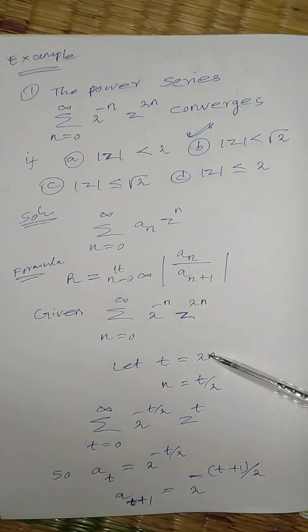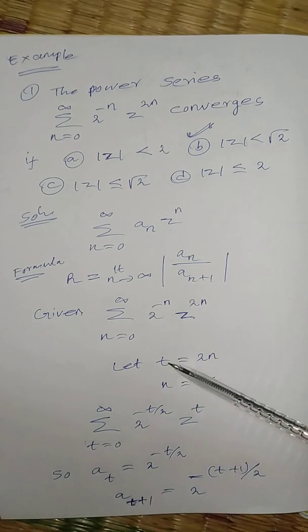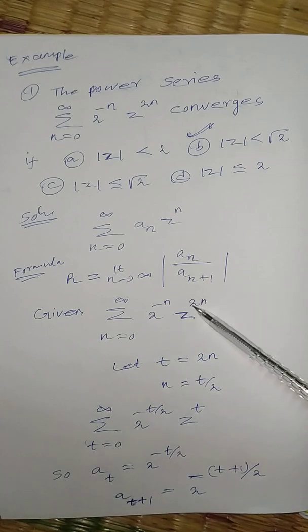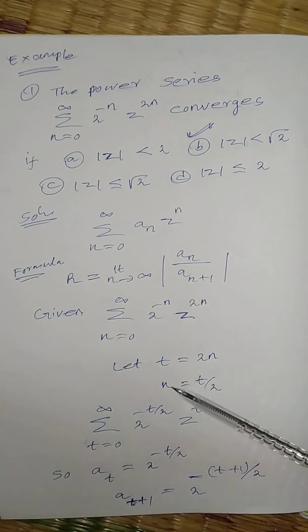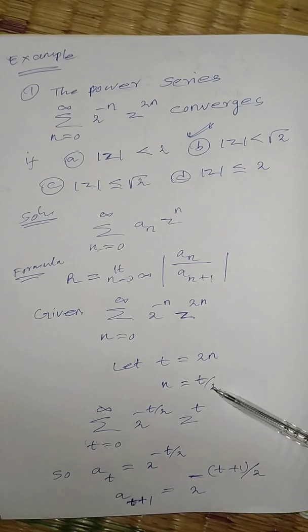Let t equal to substitute. So t equal to 2n. This is important. Please note it. Whereas n is written at all, now substitute t. It is a power t. Now n is equal to t divided by 2.